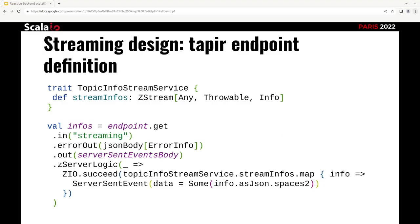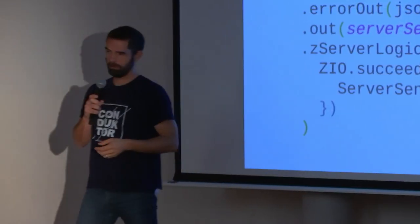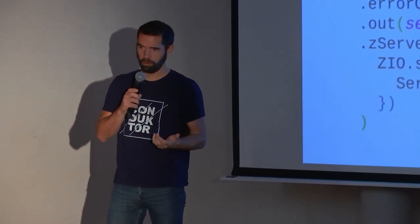Let's see some code. Here we show just how we integrate a stream in a Tapir definition. We use Tapir, which is quite well-known, to describe your APIs as REST APIs. It's just standard Tapir code where the only thing is, for your type, you say it's server-sent events. Then you put your service that actually returns a stream. There are only two differences compared to any other endpoint definition in Tapir. It's really straightforward — and it's the same for WebSocket, it's quite close actually.